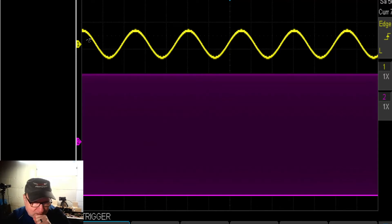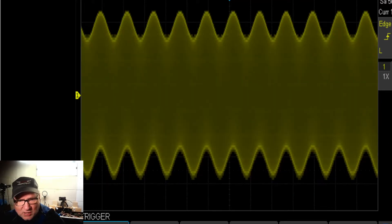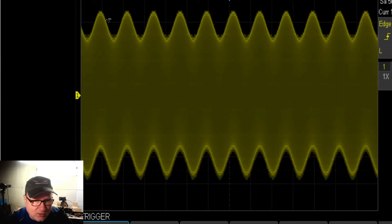Coming out of the record amplifier, you have this yellow signal. Coming out of the bias oscillator, you have this purple. And then they get added and it looks like this. Where basically you have the audio signal riding on top of the bias signal.